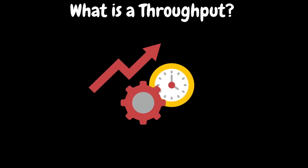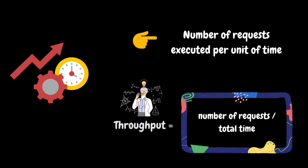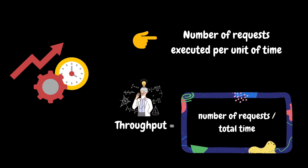First, let's try to understand what throughput is. We have already covered this in detail in our performance testing core concepts module. However, let's quickly recap. It is the amount of data successfully processed within a specific time frame — in other words, the number of requests executed per unit of time. To calculate throughput, we divide the number of requests by the total time. It is a crucial metric we validate in all performance test executions. If the system doesn't meet the expected throughput, we must investigate the root cause.